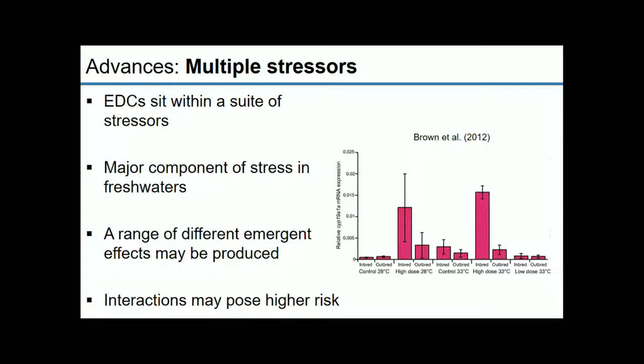A recent study by an associate at Exeter University showed that when you combine three stressors — inbreeding, an increase in temperature, and exposure to a fungicide, clotrimazole — you get an amplified additive effect, seen in the high-dose inbred population at 33 degrees. When endocrine disruption interacts with these different stressors, you can get a range of emergent effects that might not be appreciated when using singular exposures.